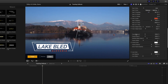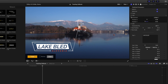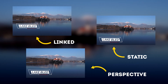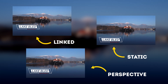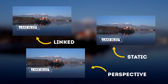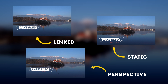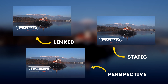It's also important to mention that you can change the type of movement the title follows. By default the movement type is set to Linked, which means the callout follows the movement of the tracking point. Static will keep the title in a specific position on screen, and the line linking the callout to the tracking point changes between them. Perspective will move the callout relative to the tracking point depending on the movement in your shot.